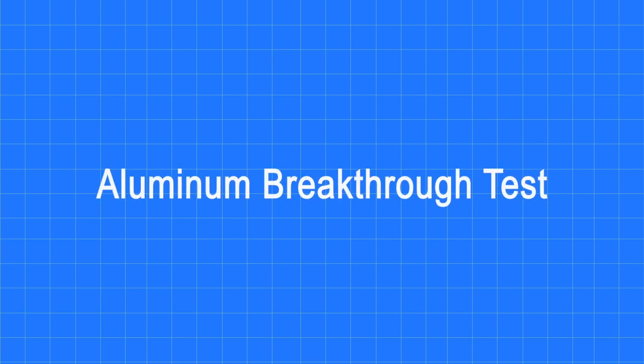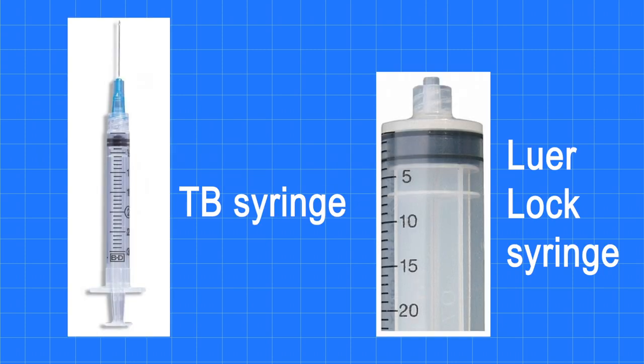This is performed to detect any excess aluminum that may have been introduced during the manufacturing process. To extract a sample for QC testing, use a 5ml TB syringe.